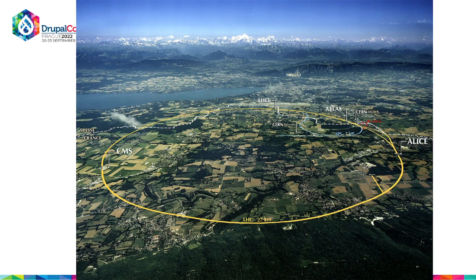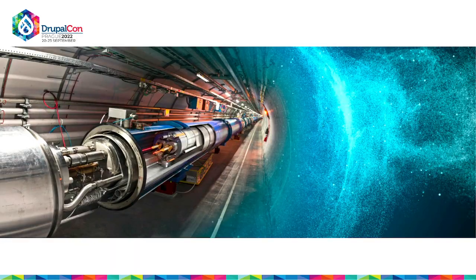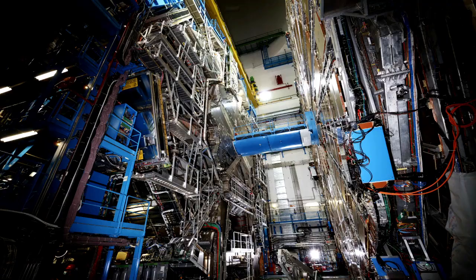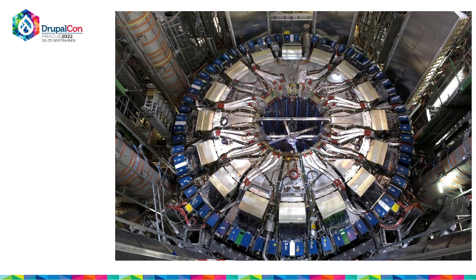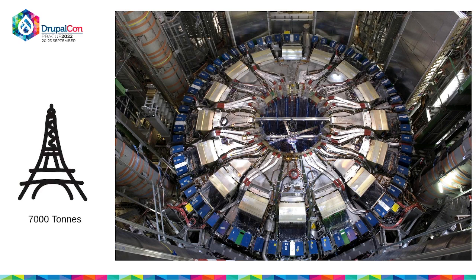Just to give an overview, this is called the Large Hadron Collider. We have a couple of experiments on this ring. One of them is called Atlas. The weight of this experiment is 7,000 tons, which is equal to the weight of the Eiffel Tower.